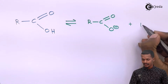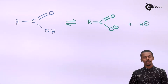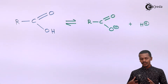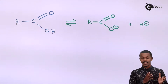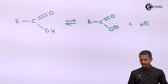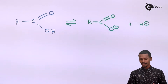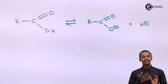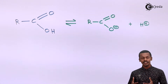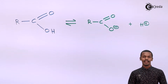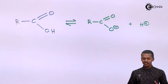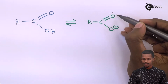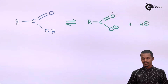Those species are: R-C(=O)-O⁻, which has a negative charge, and H⁺, which is a proton. Deprotonation has occurred, giving us a carboxylate ion and a proton. We are concerned with the carboxylate ion because it consists of pi electrons and lone pairs of electrons located on both oxygens.